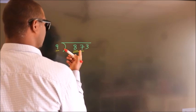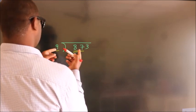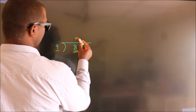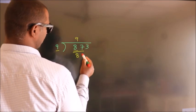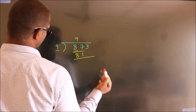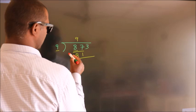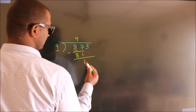A number close to 87 in the 9 table is 9 9's, 81. Now we should subtract, we get 6.